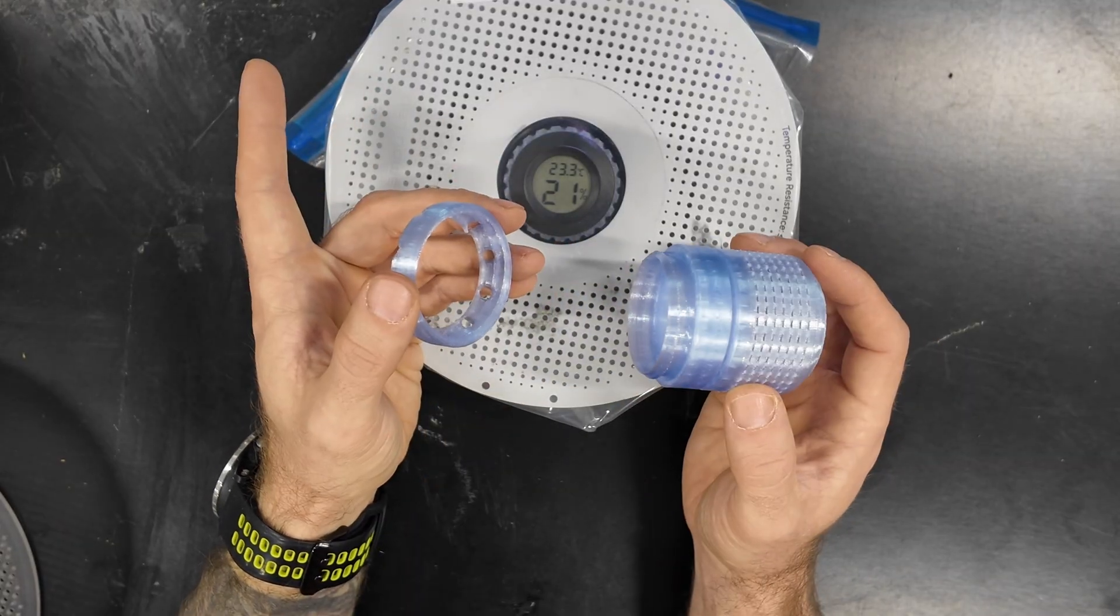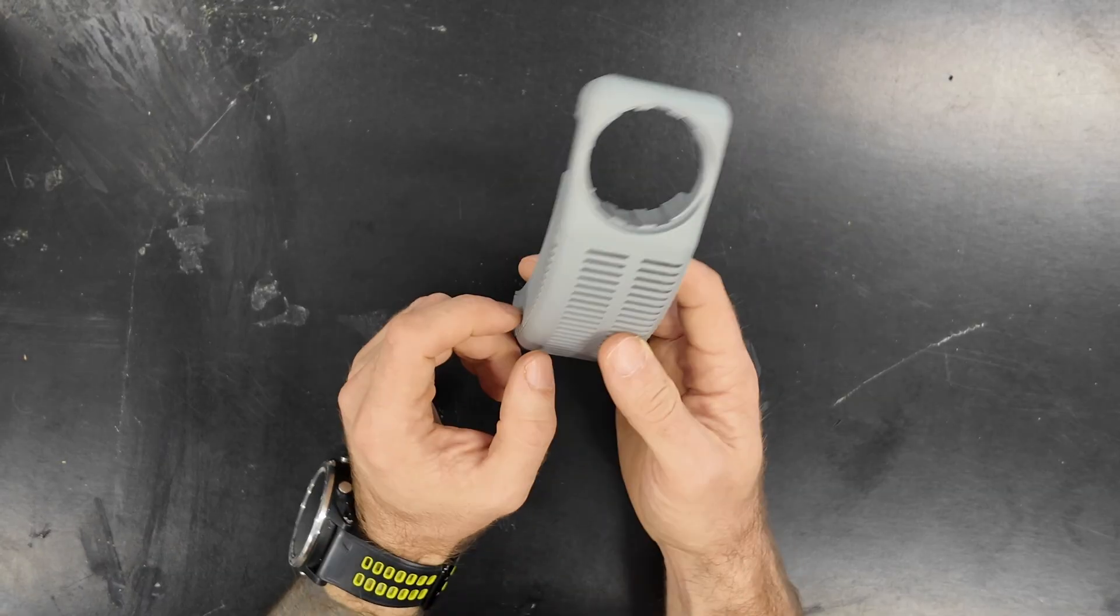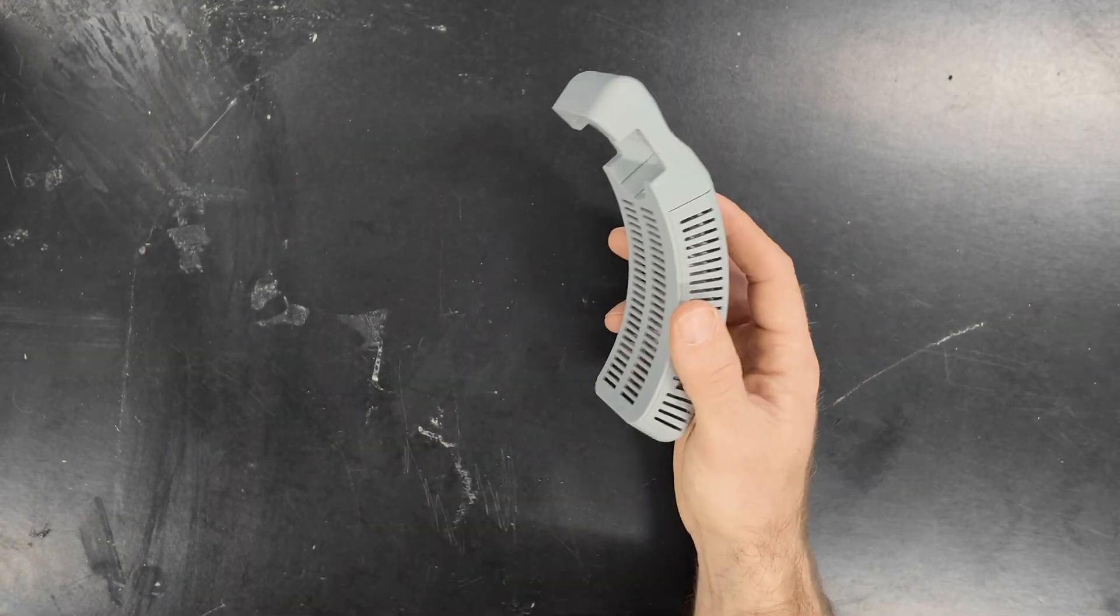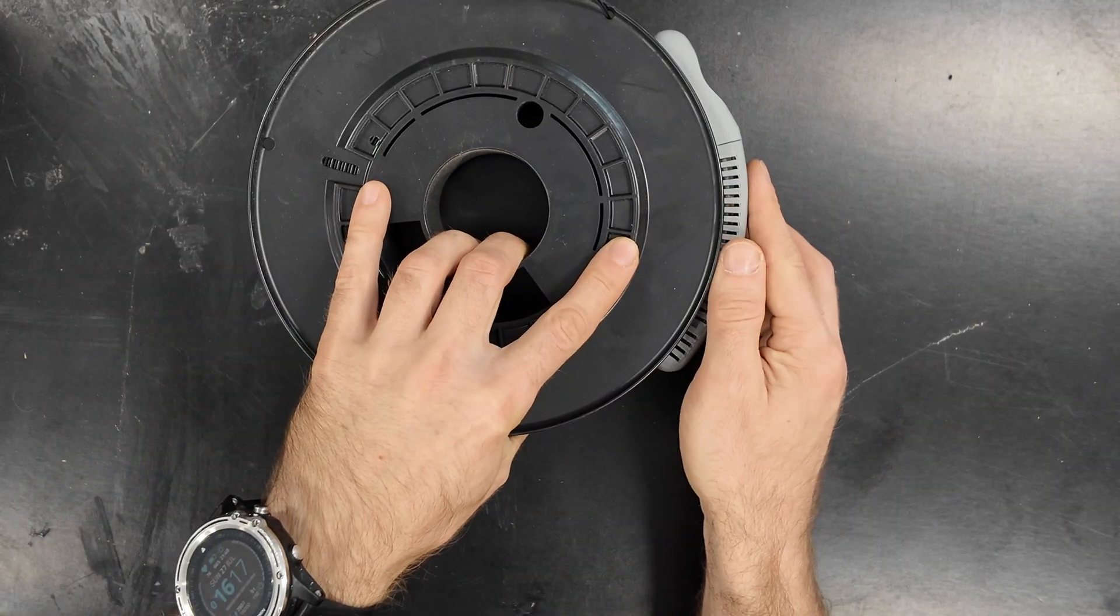And by other way I mean this desiccant container I've made that's meant to be put on the side of the spool.